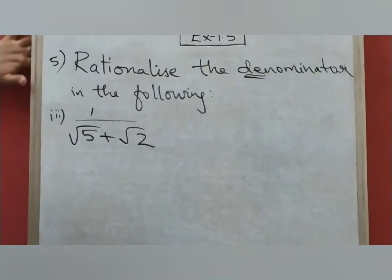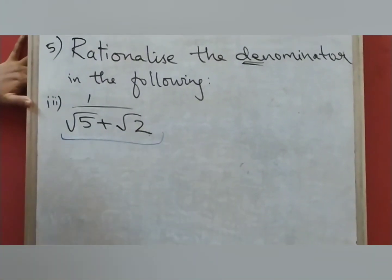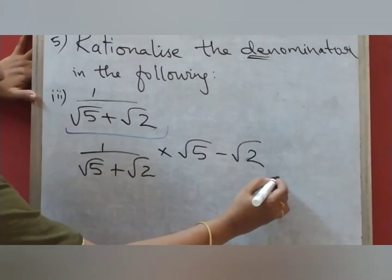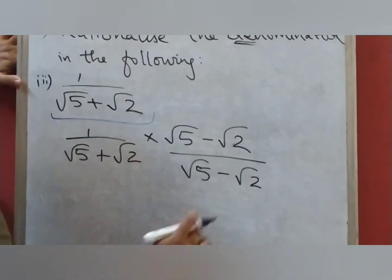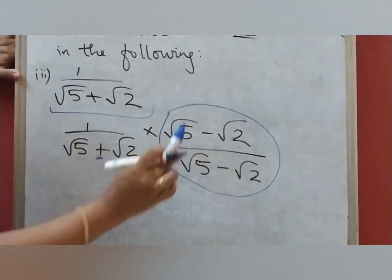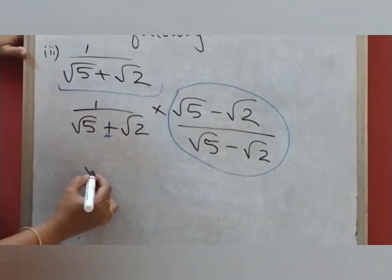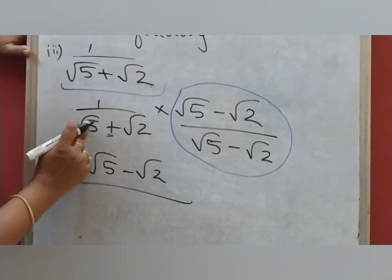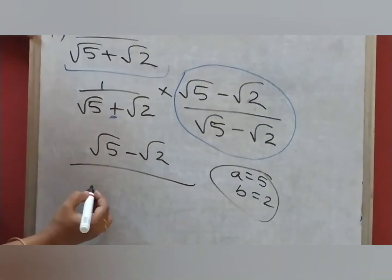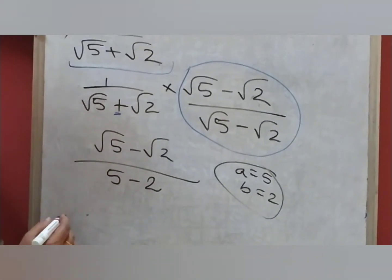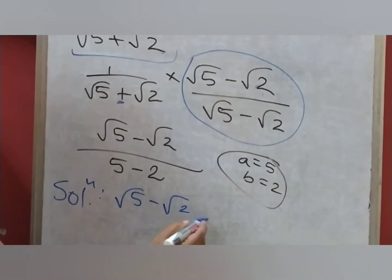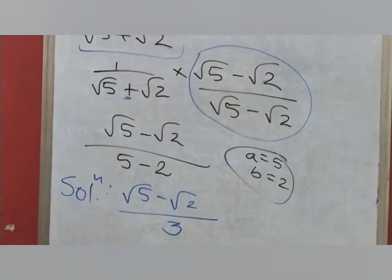The third question says 1 by (√5 + √2). The denominator is (√5 + √2). Since it is plus, we multiply and divide by (√5 − √2). The numerator becomes 1 into (√5 − √2) = (√5 − √2). In the denominator, a is 5 and b is 2. Using the formula, we get 5 − 2 = 3. So the solution is (√5 − √2) divided by 3.